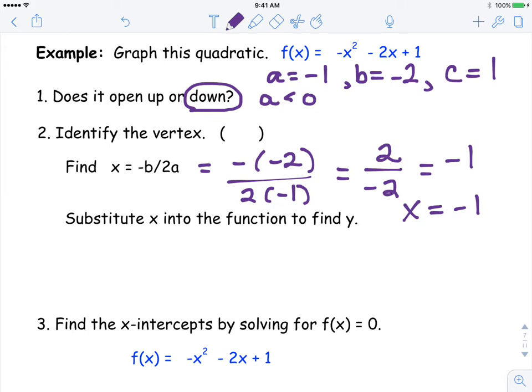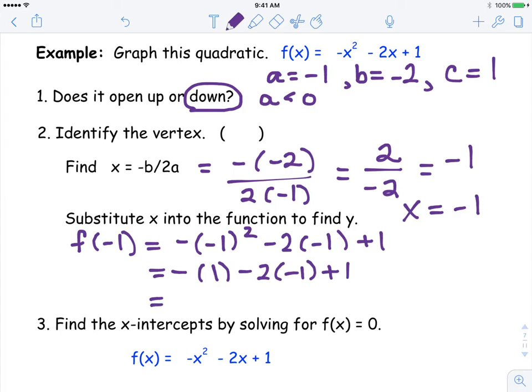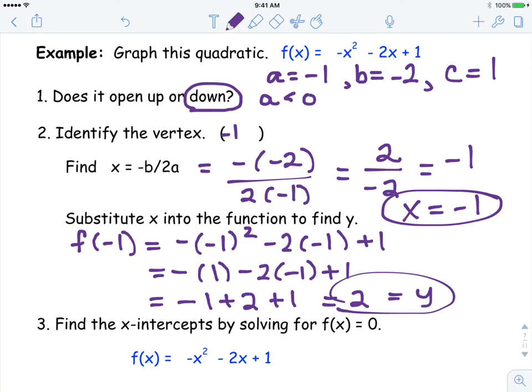Now we're going to substitute that x value into the function. So we're going to say f of negative one. Now we do our orders of operation, PEMDAS. Negative one times negative one is positive one. Do our multiplication: negative one, positive two, positive one. Combine those terms together, giving you two. So the vertex, this is your x and this is your y of your vertex. We're going to write it as an ordered pair: negative one, comma, two.